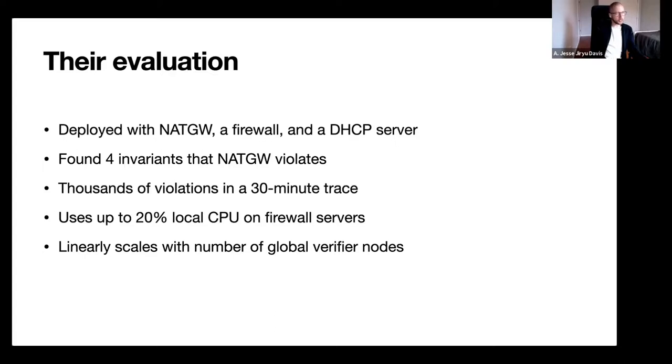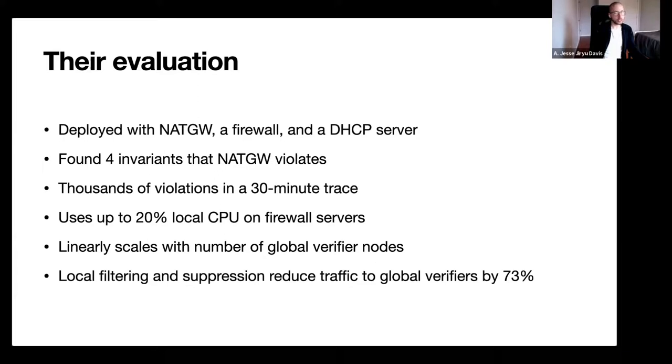It scales linearly because it's sort of embarrassingly parallel at the global level. You can verify each stream individually from all of the others, and you can scale up as much as you want by adding global verifier nodes. They found that I think this statistic comes from the NAT gateway system - that local filtering and suppression reduced traffic to global verifiers by about three quarters. And I guess maybe they must have been running it in real time on at least one of these tests because they have this stat that it only took milliseconds from the event that caused an invariant violation to the time that Aragog detected that violation.